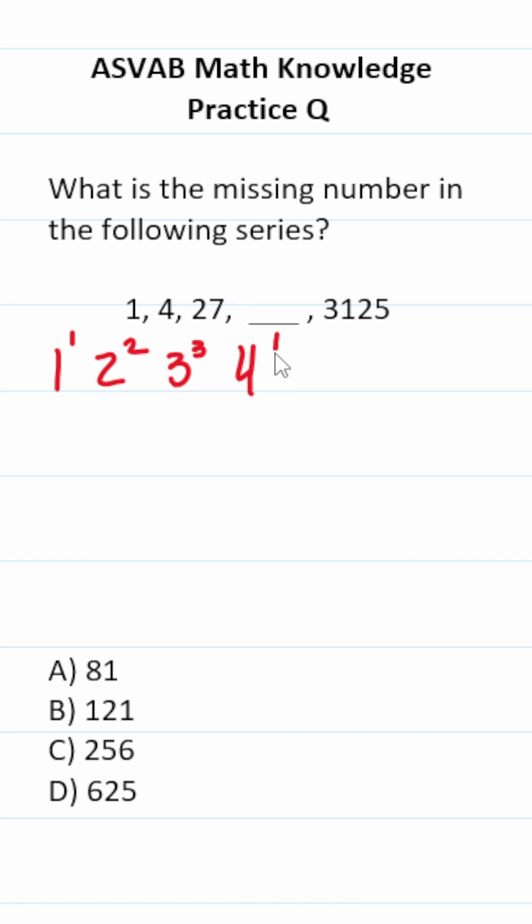So that must mean our missing number is going to be 4 to the fourth. Of course, that looks like this. 4 to the fourth is equal to 4 multiplied by itself 4 times.